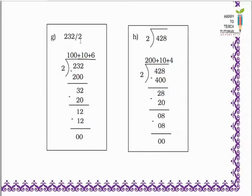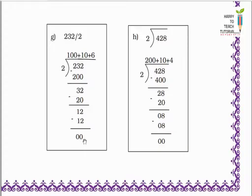Next: 232 divided by 2 — we have to share 232 among 2 people. I start by giving 100 to each. 100 twos are 200. 232 minus 200 equals 32. Still I have to distribute 32 among 2 people. Next I give 10 more to each. 2 tens are 20. 32 minus 20 equals 12. Still I have to distribute 12 among 2 people. Next I give 6 more to each. 2 sixes are 12. 12 minus 12 equals 0, remainder is 0. Each one gets 100 plus 10 plus 6 equals 116.